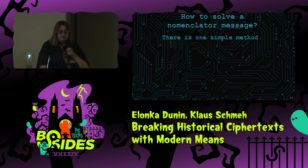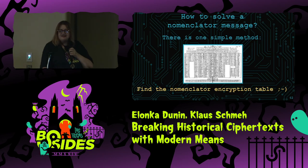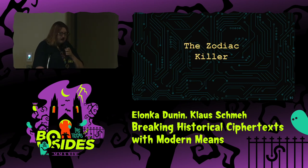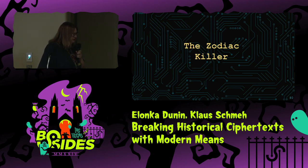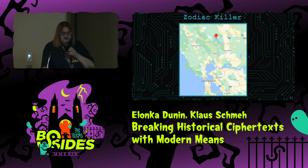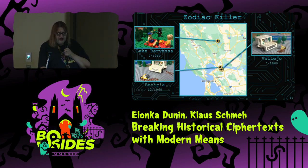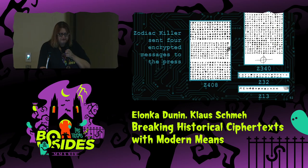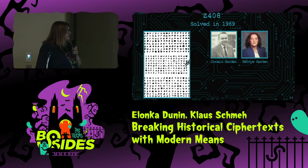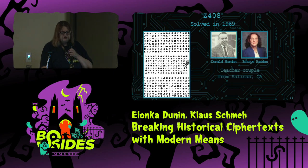How do you solve a nomenclator message? The simplest method is you find the table. However, that's not always possible, so there are different ways of doing it — you can derive the table from other messages that have been solved. I'm going to talk briefly about the Zodiac Killer — a serial killer in Northern California who sent encrypted messages to the press saying they would give information about who he was. One of the messages was solved very quickly by a husband and wife team, Donald and Betty Harden. Between the two of them, they solved one called the Z408 — named because there were 408 symbols in it.